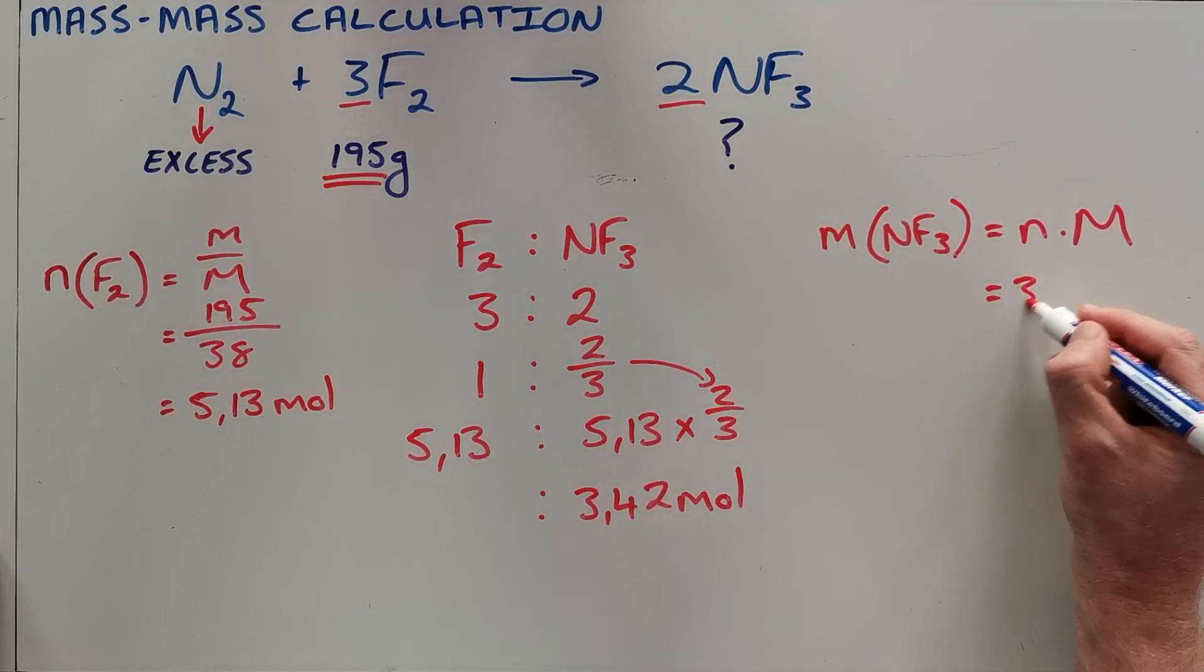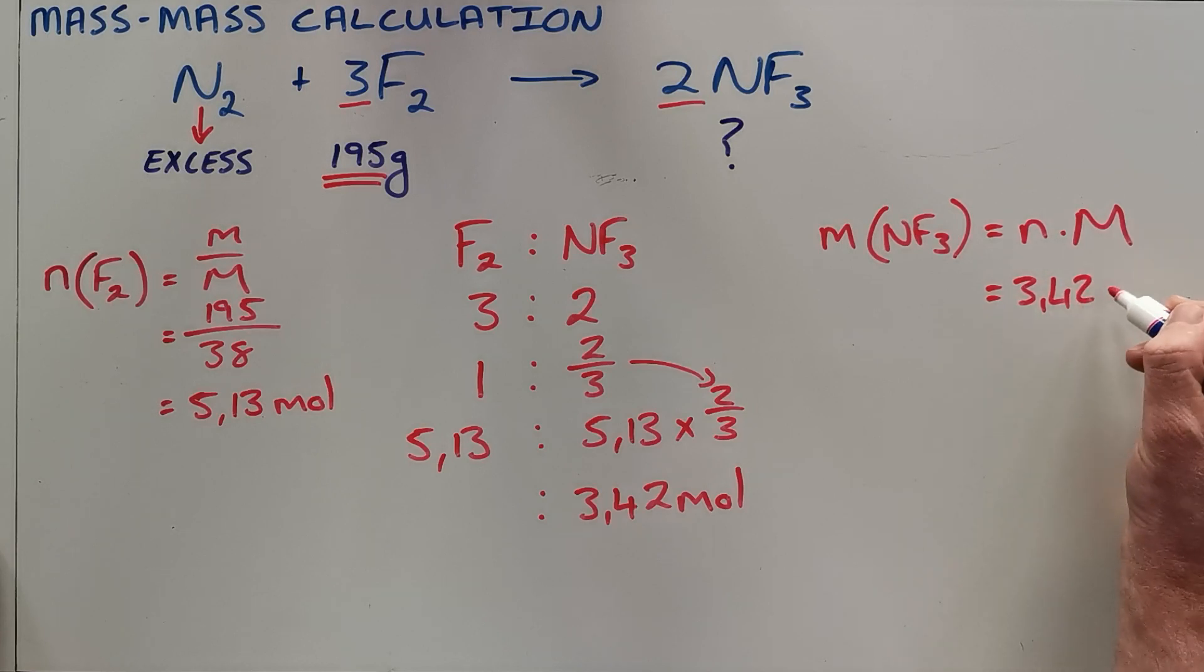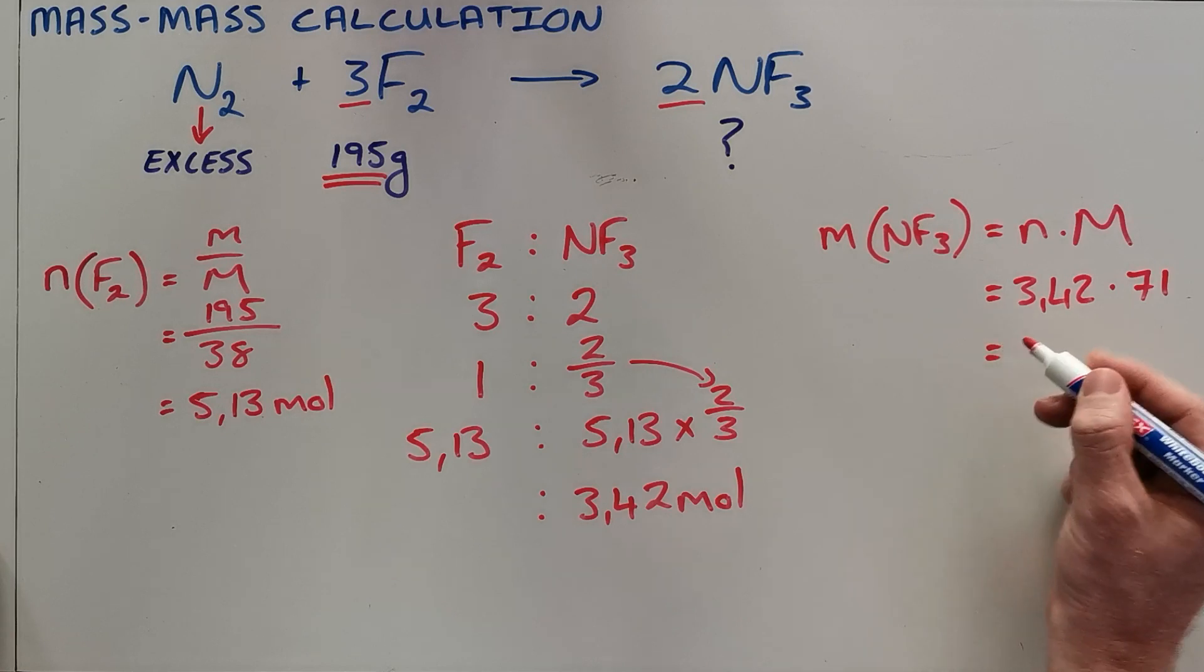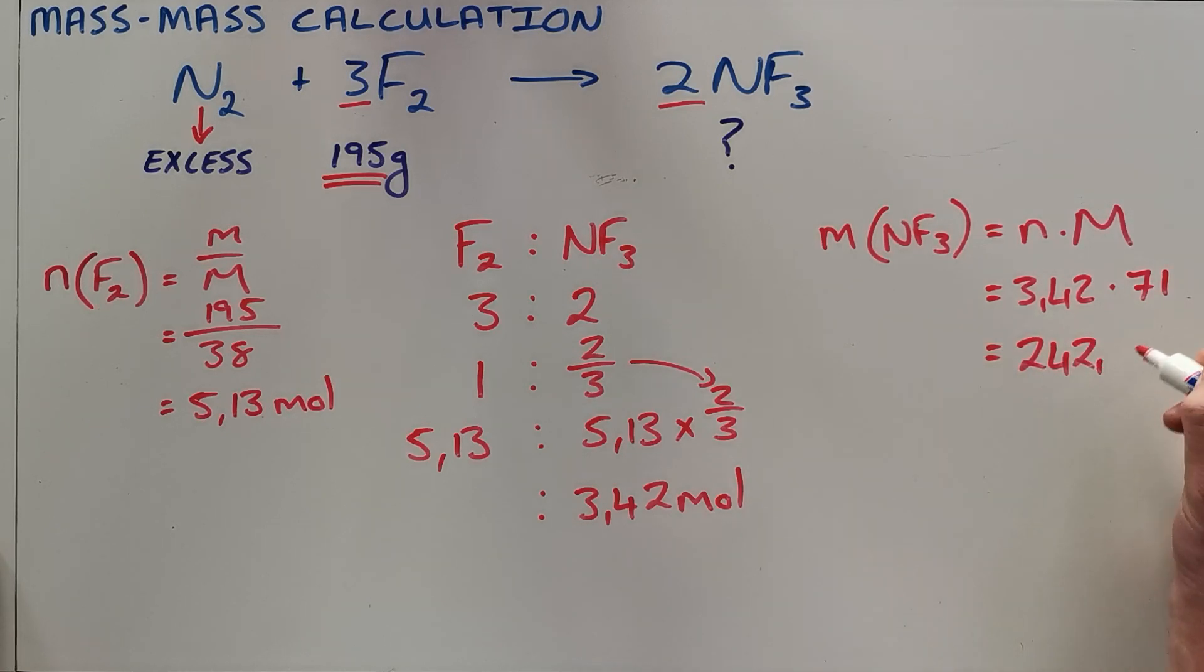That in this case is 3.42 times the molar mass that we can calculate to be 71, which means that we would form 242.82 grams of NF3.